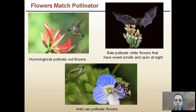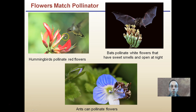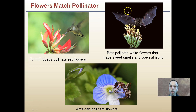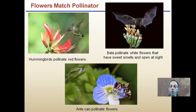Flowers match the pollinator. Hummingbirds tend to pollinate red flowers, and you'll notice they have a very long, thin beak, and the flowers replicate that shape. Bats pollinate white flowers that have sweet smells and open at night — those sweet smells help the bats detect them. Moths are also nighttime pollinators. Some gourds will pollinate very white flowers that open at night. Ants can also pollinate, as we see here — an ant getting pollen grains all over it, then going to the next flower to help transfer pollen or even help that same flower get pollinated with itself.